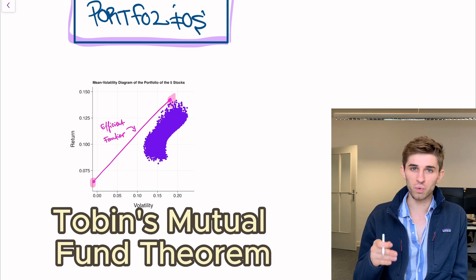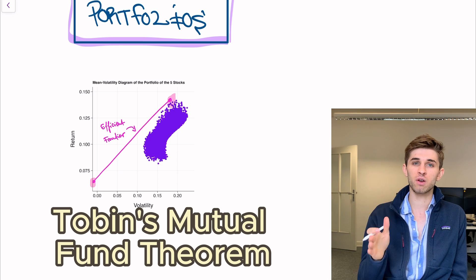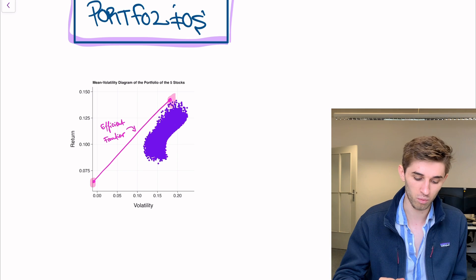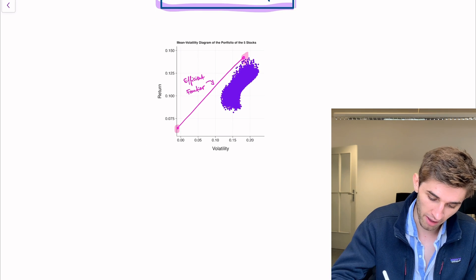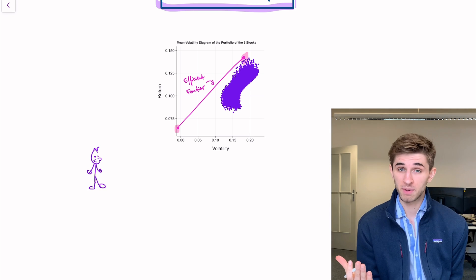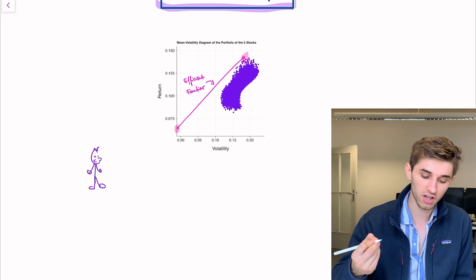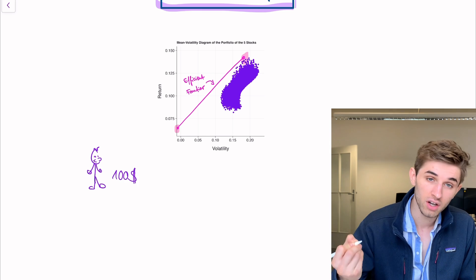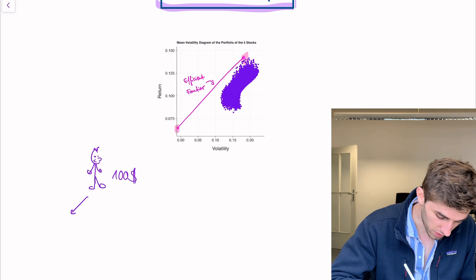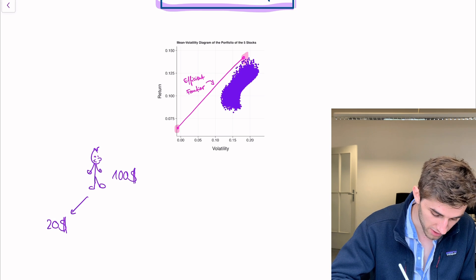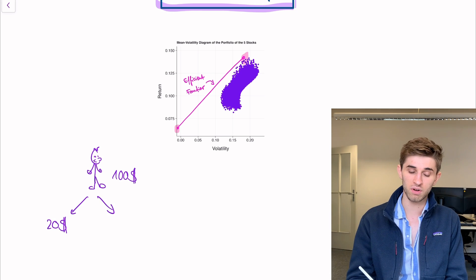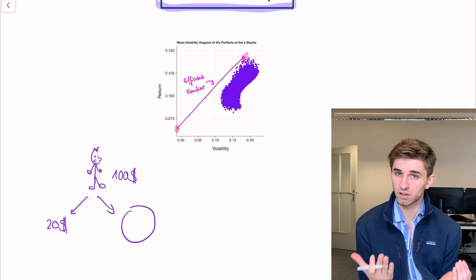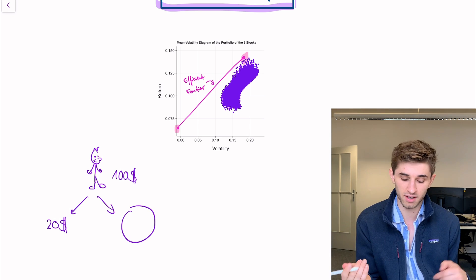So now we can go a step further and actually think what happens if everybody on the market thinks and acts that way. So let's say we have Anna. And Anna is such a mean volatility investor. So her decision is of the $100 she wants to invest, she will put $20 into the riskless bond and the rest, the $80 into the tangency portfolio.